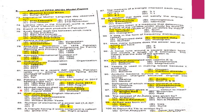MCQ 83: Michael Jackson died in June 2009. MCQ 84: The poet of beauty in English Literature is John Keats.